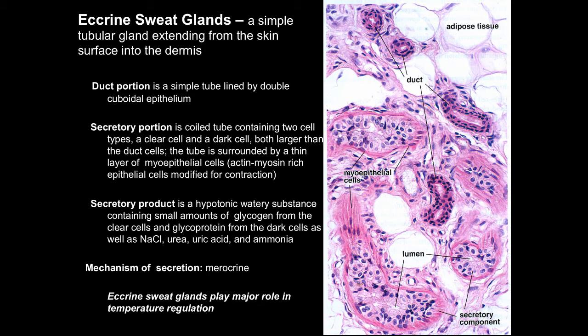The secretory product also contains salts, urea, uric acid, and ammonia. The mechanism of secretion for the eccrine sweat glands is merocrine. The eccrine glands do function in an excretory manner in a minor sense, getting rid of salts, urea, and some ammonia, but most importantly the eccrine sweat glands play a major role in the body's temperature regulation, because as you sweat you get evaporative cooling as the water evaporates.